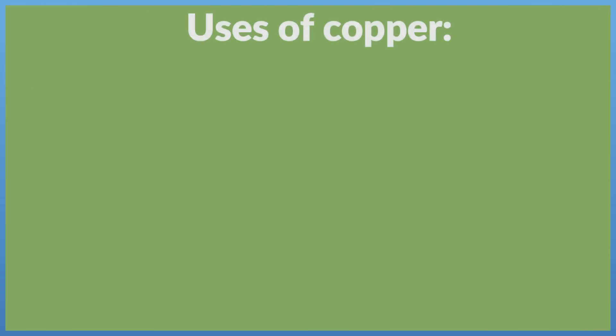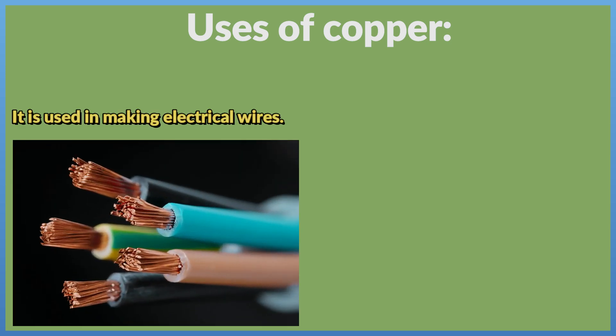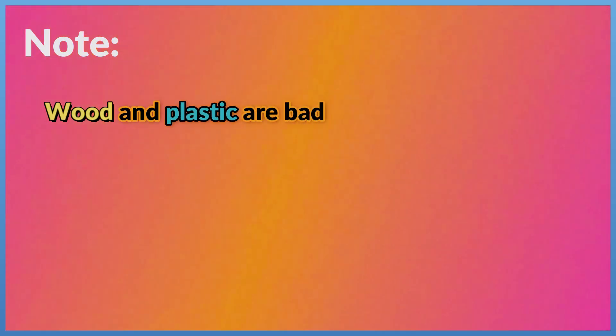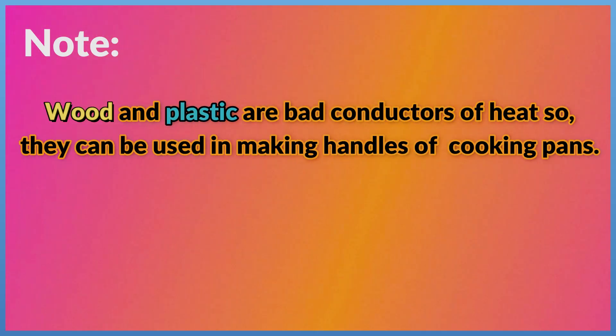Uses of Copper: It is used in making electrical wires. It is used in making cooking pans, as it is a good conductor of heat. Note: Wood and plastic are bad conductors of heat, so they can be used in making handles of cooking pans.